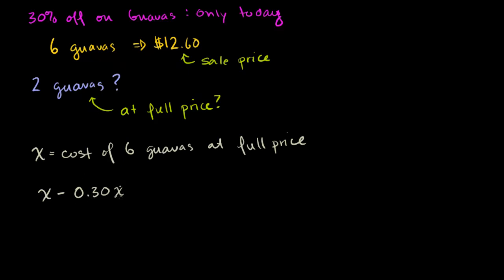This is how we figure out the sale price. This is going to be equal to that $12.60 right there. That's going to be equal to $12.60. I just took 30% off of the full price. And now we just do algebra. X is the same thing as 1X. So 1X minus 0.3X is going to be equal to 0.7X. So we get 0.7X is equal to 12.60.